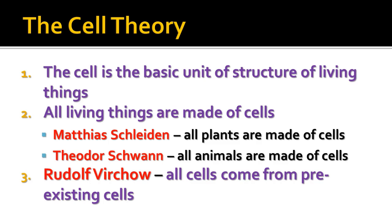The third statement is that all cells come from pre-existing cells. This goes back to trying to refute the idea of spontaneous generation. This statement was made by another German scientist named Rudolf Virchow. These three statements of the cell theory are very important and we still abide by them today when discussing cells.